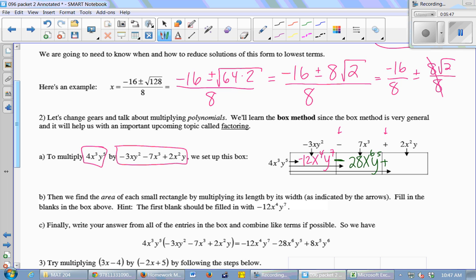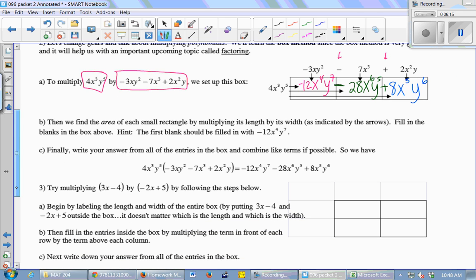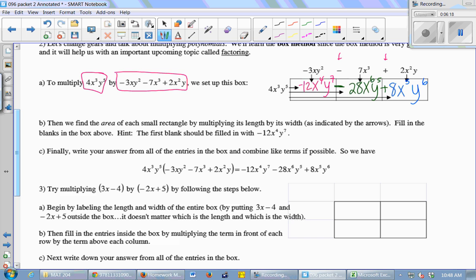And then I've got this plus here. And 4x cubed y to the 5th times 2x squared y. 4 times 2 is 8. x cubed times x squared? x to the 5th. And y to the 5th times y? y to the 6th. Then you add up all of the terms in your boxes, and that's your answer. So when I add up negative 12x to the 4th y to the 7th, negative 28x to the 6th y to the 5th, and 8x to the 5th y to the 6th. Those are the three terms in the boxes.